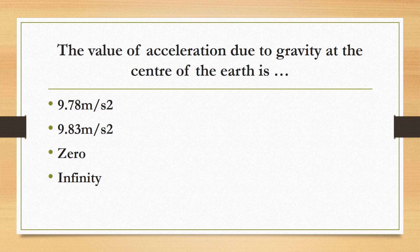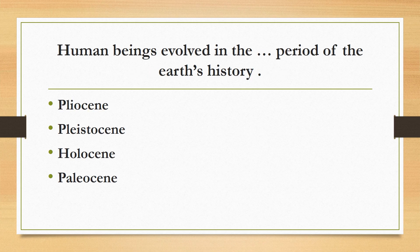Human beings evolved in which period of Earth's history? Pliocene, Pleistocene, Holocene, or Paleocene? The correct answer is Pleistocene. Human beings evolved in the Pleistocene, and the earliest primates appeared in the Paleocene.